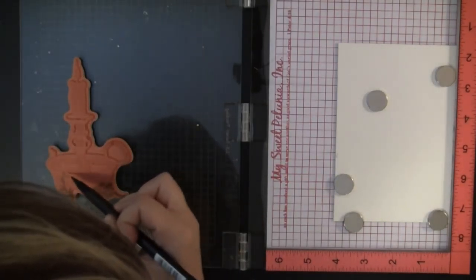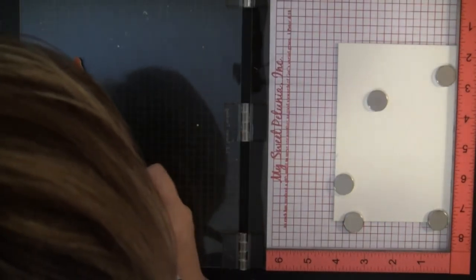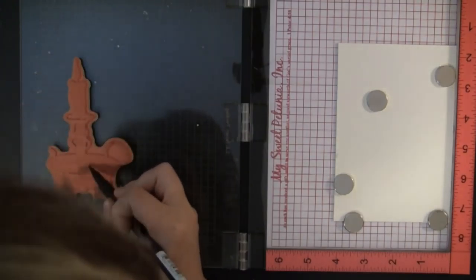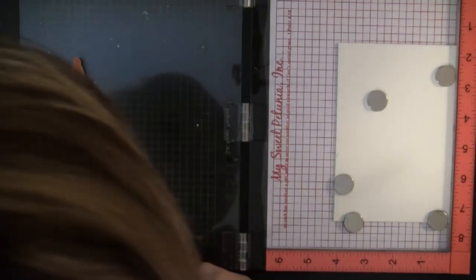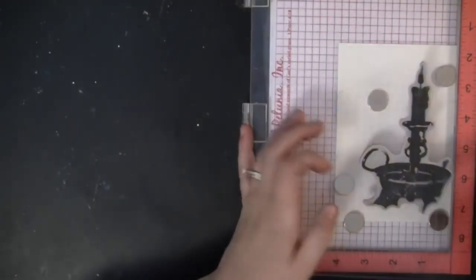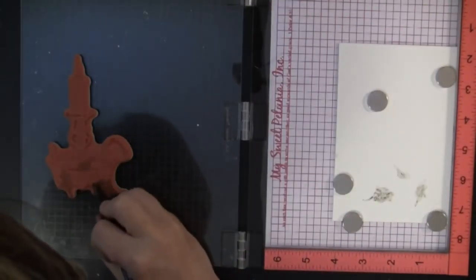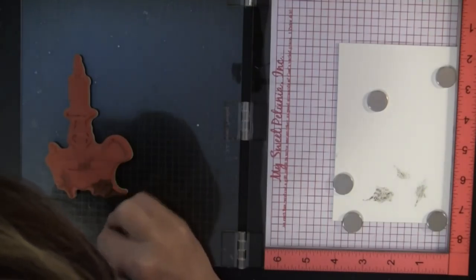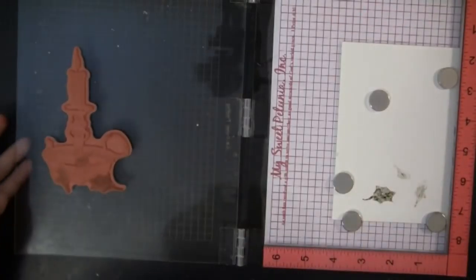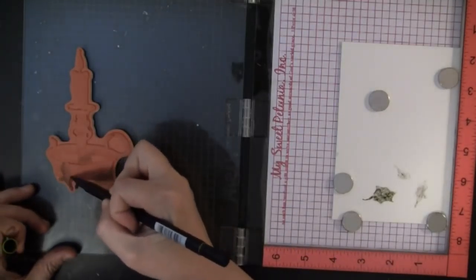To begin, I've got my stamp mounted onto my MISTI and I'm stamping onto hot press watercolor paper. I really prefer the hot press watercolor paper for this technique because when I miss the stamp and stamp onto the watercolor paper, it seems to really absorb the ink well and things don't bleed too much even if I might apply a little extra water.